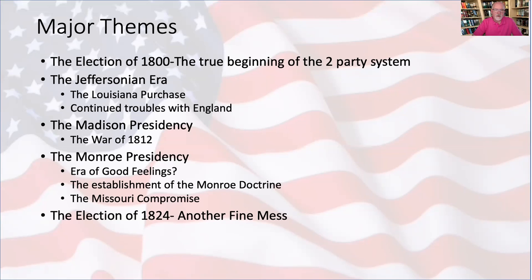But the British and French continued to interfere with American trade, and the British started to impose what they called impressment of American seamen — stopping American ships on the high seas, looking for British Royal Navy deserters who might or might not be American citizens, and removing them and taking them back to the British Navy. Jefferson never really dealt with this particular situation, but he was able to avoid outright war with England.